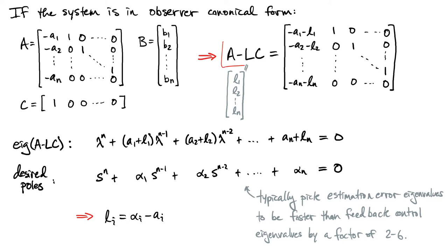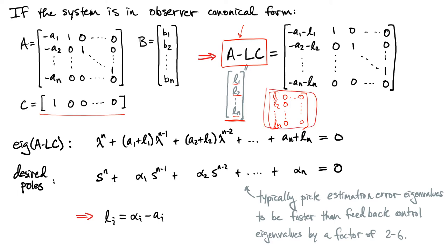Our objective is to place the poles of A minus LC. Here L is a column vector with entries L1 through Ln, which we pick to guarantee that the eigenvalues of A minus LC are what we want. Recall that the C matrix has a nice sparse structure, and when multiplied by L it effectively creates a matrix with L1, L2, through Ln in one column and zeros everywhere else. When we subtract this LC matrix from the A matrix, all those L1 through Ln terms subtract nicely onto the first column, so all the dynamics is captured in that first column with the off-diagonal ones.